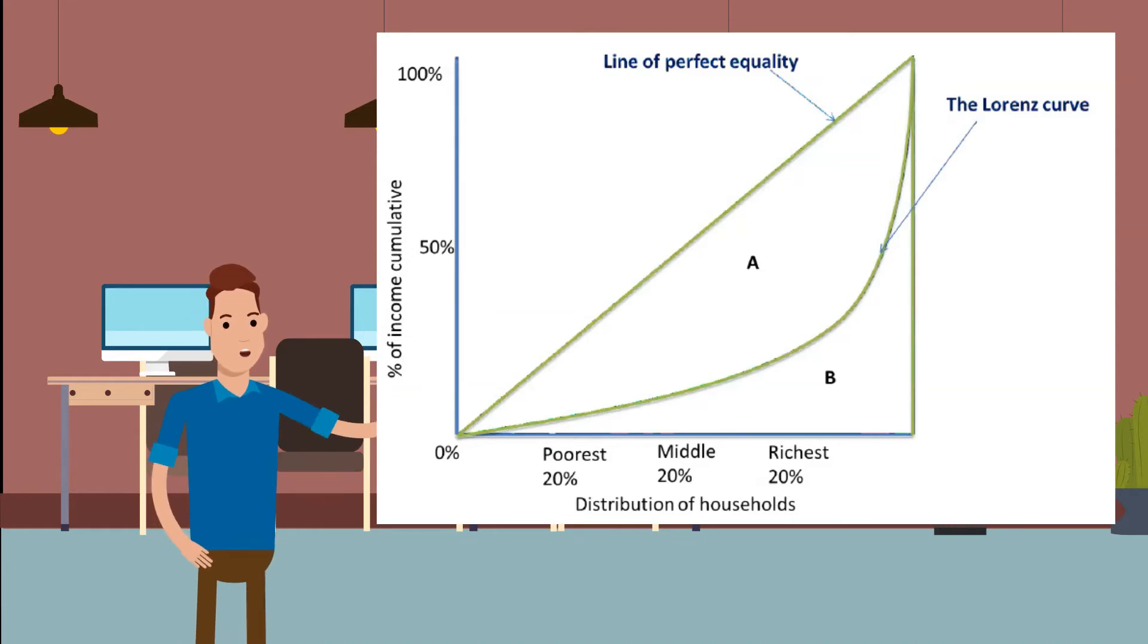Secondly, the Gini coefficient. The ratio of the area between the 45-degree line and the Lorenz curve is divided by the whole triangle under the 45-degree curve. It is measured between 1 and 0 and the bigger the coefficient, the more equal the country.